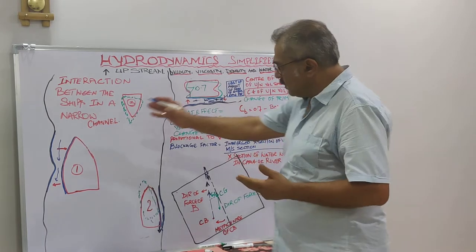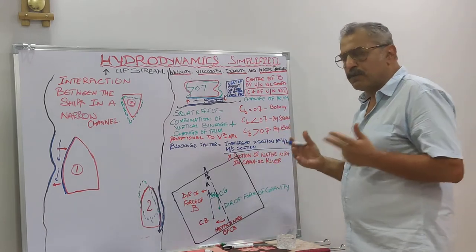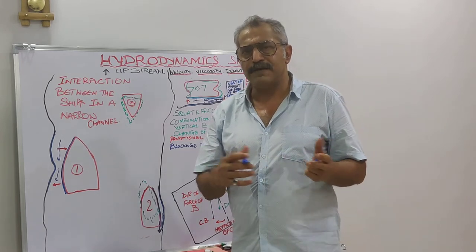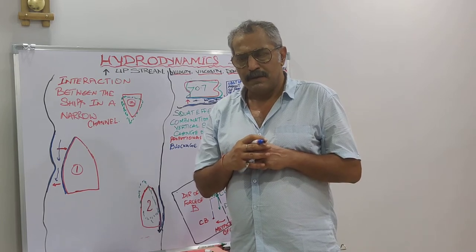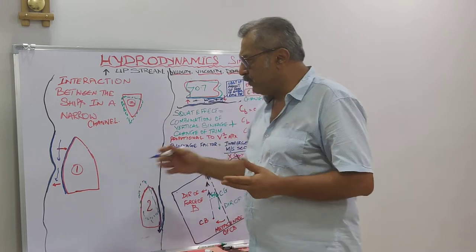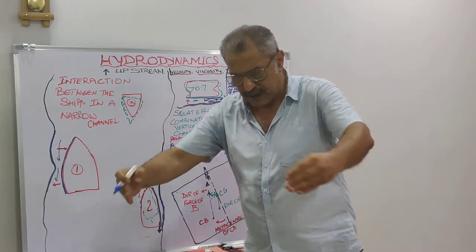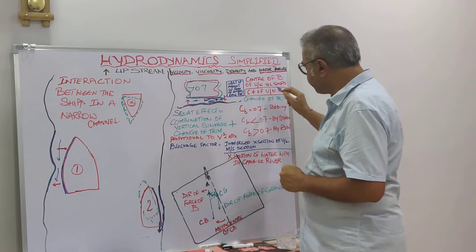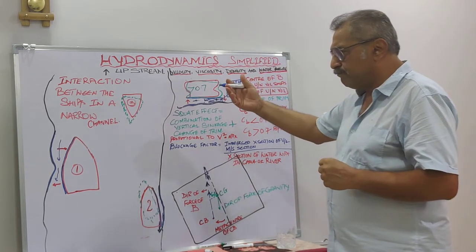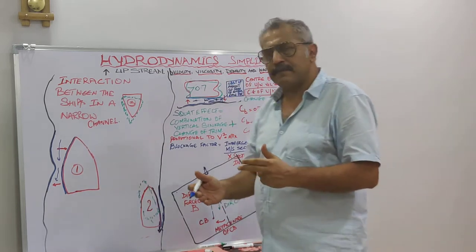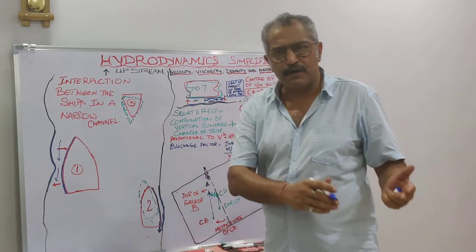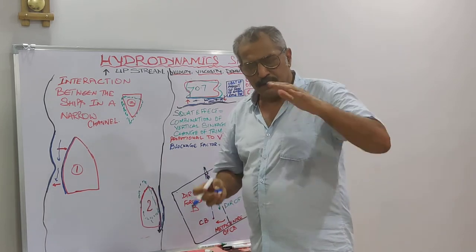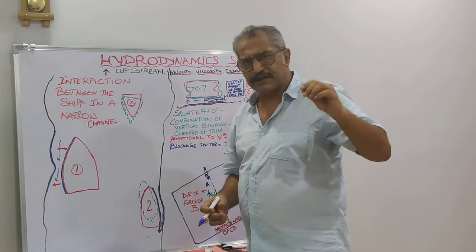Now let's discuss the underwater volume of displacement and the center of buoyancy. The underwater volume of displacement is that void - how much she is drawing and what displacement that area of water she is covering creates. The center of buoyancy, conversely speaking, is nothing but the center of gravity of the underwater volume of displacement, just as we have a center of gravity for the vessel and the load she is carrying.